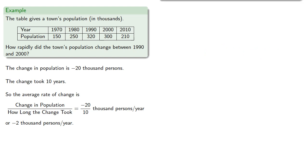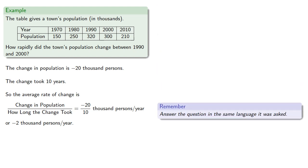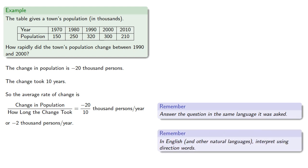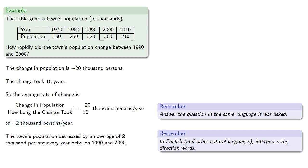Remember, we should answer the question in the same language it was asked. The question was in a natural language, so our answer should be in a natural language. In English and other natural languages, we should interpret using direction words. So this negative amount should be read as a decrease, and so we might say the town's population decreased by an average of 2,000 persons every year between 1990 and 2000.